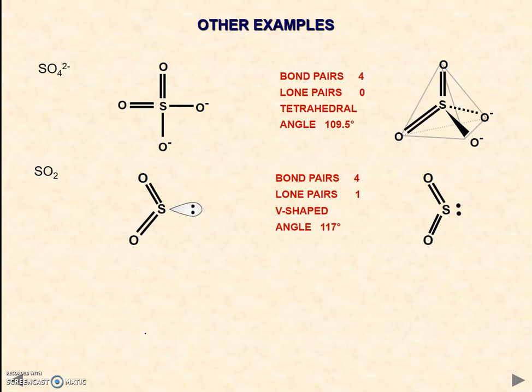We can see here with these examples of sulfate that if you've got four bond pairs, then you've got a tetrahedral shape with four bond pairs, no lone pairs, and a bond angle of 109.5 degrees.